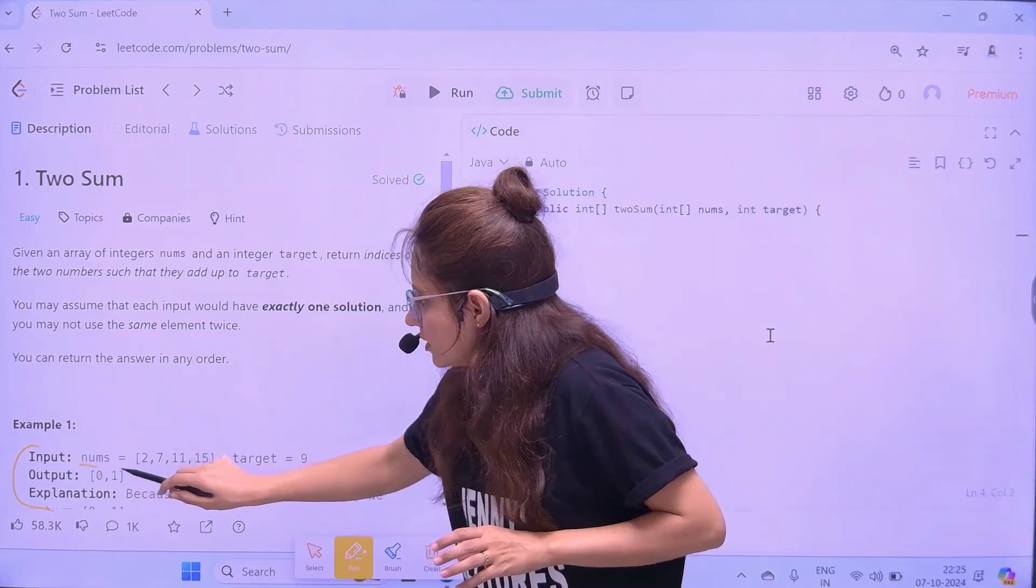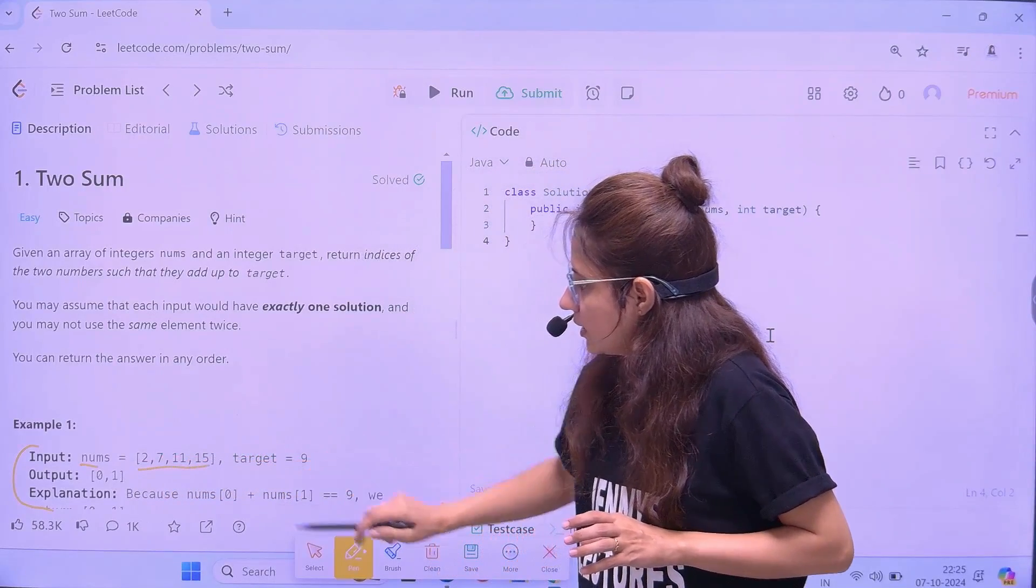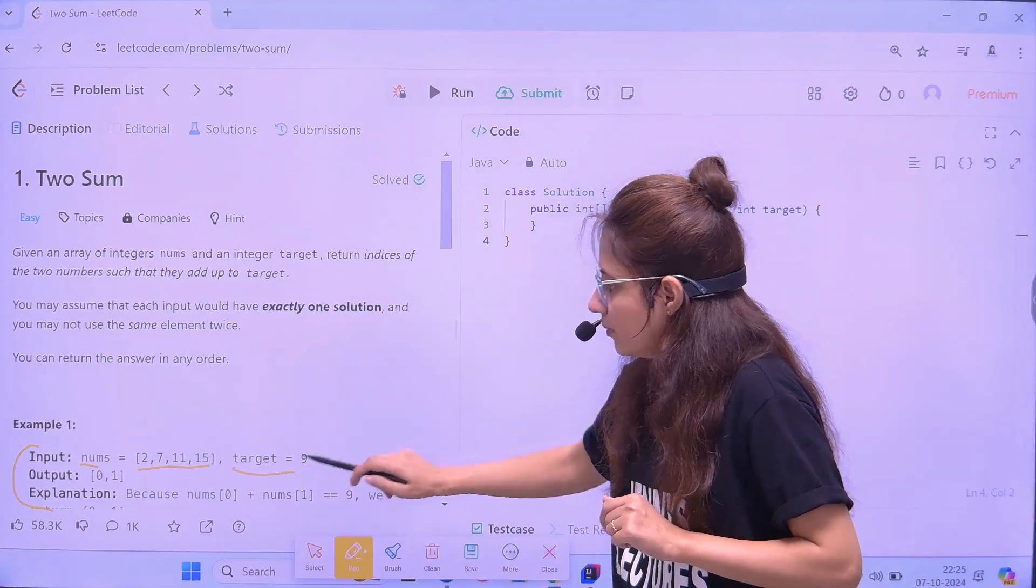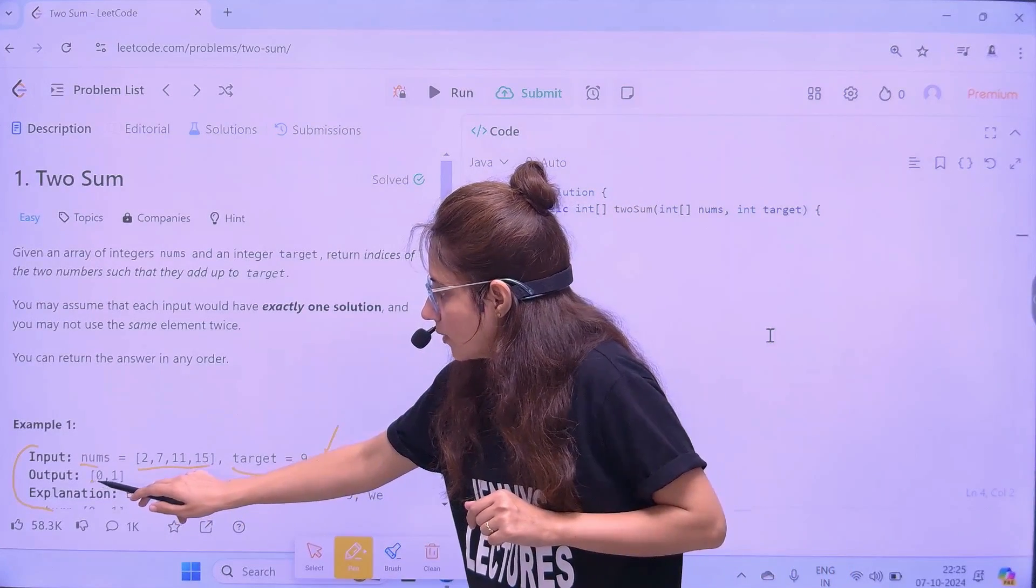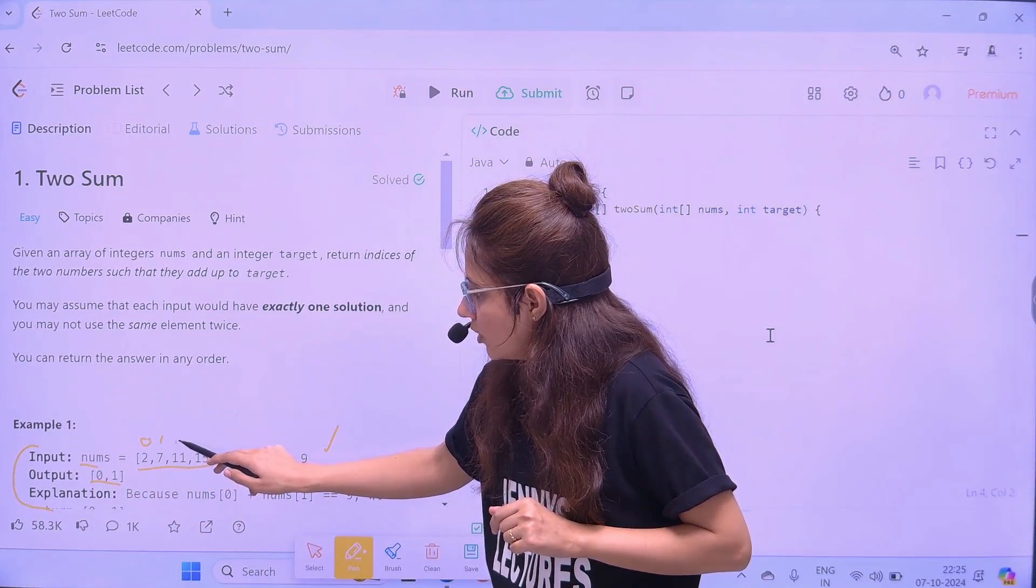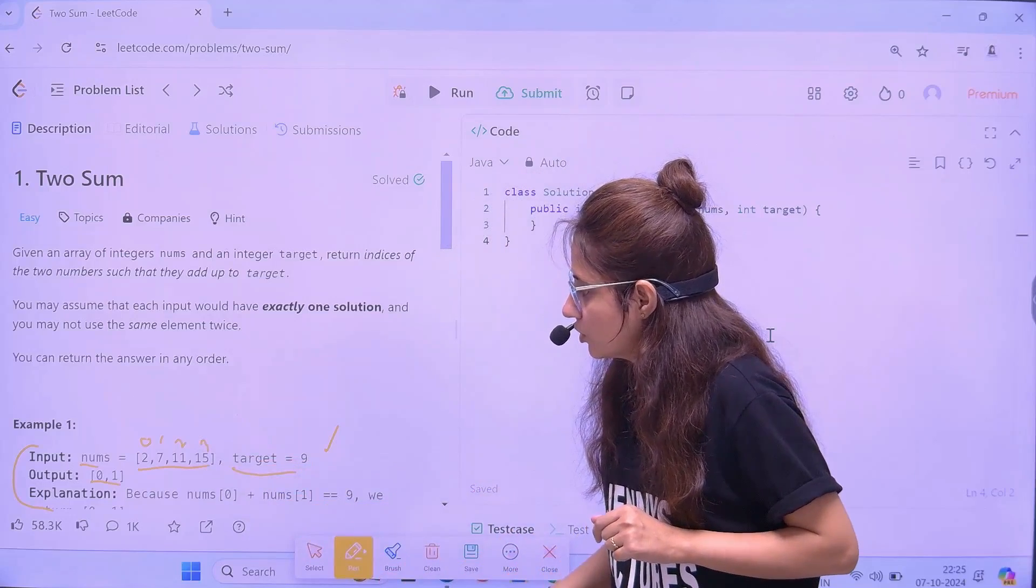So, what you need to do is, see, this is one example. So, input is given, this num is the array, 2, 7, 11, 15. And the target will be given to you, that is 9. So, now output is 0, 1. Means, indices of this array is 0, 1, 2, 3, index. Start from 0.